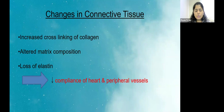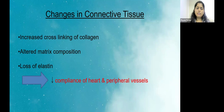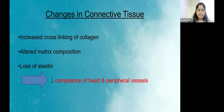Changes occurring in connective tissue: there is reduced elastin and increased number of collagen cross-linkages. Increased collagen linking leads to stiffening. There is also altered matrix composition and loss of elastin, which leads to reduced elasticity. This eventually reduces the compliance of the heart and peripheral vessels, which further increases BP.